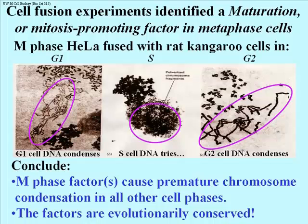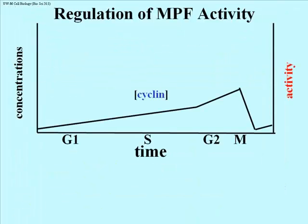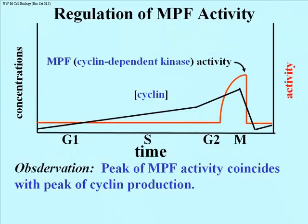The regulatory subunit of this mitosis promoting factor is called cyclin. Why is it called cyclin? Because this polypeptide rises and falls with each cell cycle. The kinase activity peaks at the same time as levels of cyclin peak. The concentration of the kinase subunit remains essentially constant throughout the cell cycle. It is called cyclin-dependent kinase, or CDK, for most cells, because it had to be bound to cyclin in order for the enzyme to be functional.